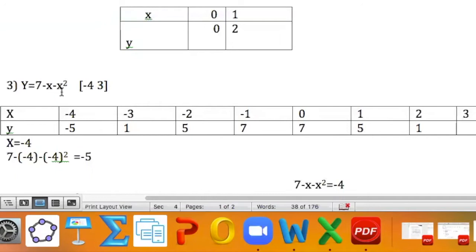Wherever you see x, you're replacing it with first negative 4. Now, as you can see, I have 7 minus, I have in brackets, negative 4, close bracket, minus, open bracket, negative 4, close bracket, squared.